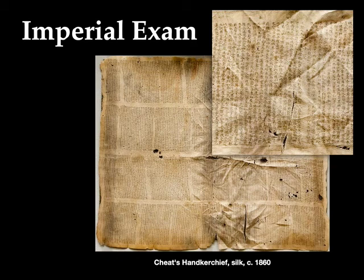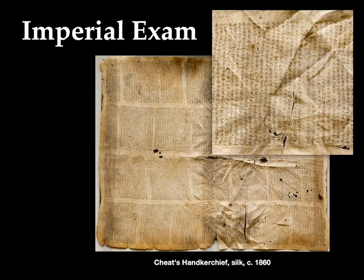The pressures to do well on this exam, of course, led people to feel a desperate need to cheat. That is what you see here in this handkerchief with its minutely written Chinese script. This silk handkerchief with all its texts would have been folded discreetly into someone's clothing and pulled out during the exam to help them do better. However, the amount of information contained on this handkerchief is indicative of the high demand that people had for knowledge about Confucian scholarship and Confucian learning.